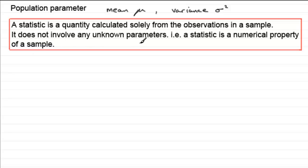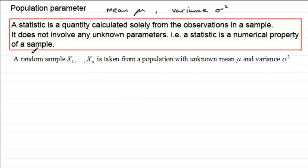Let me give you some examples. Suppose we take a random sample, x₁, x₂, all the way up to xₙ. Again, it's taken from a population with an unknown mean μ and a variance σ².